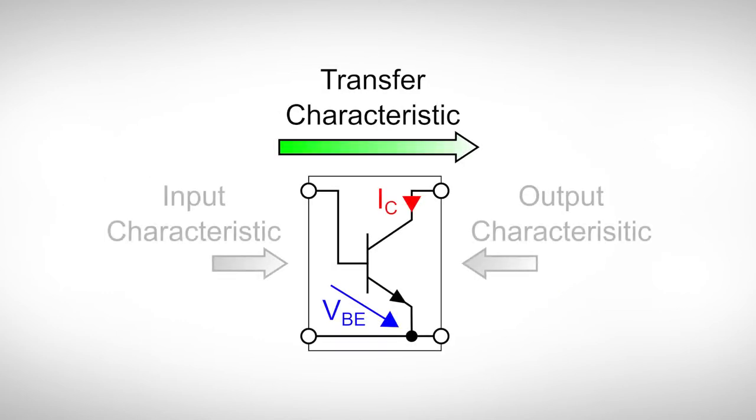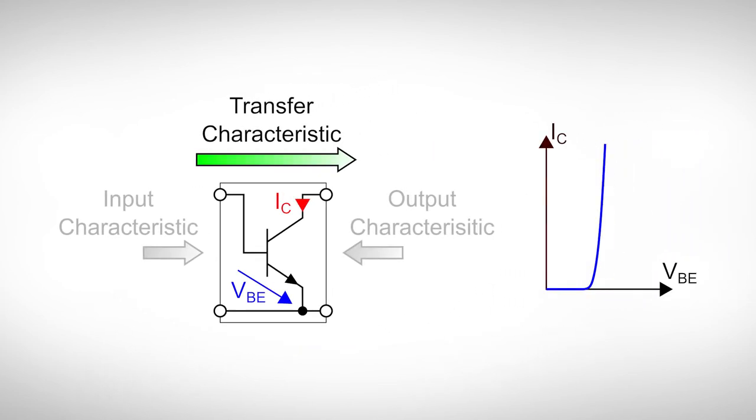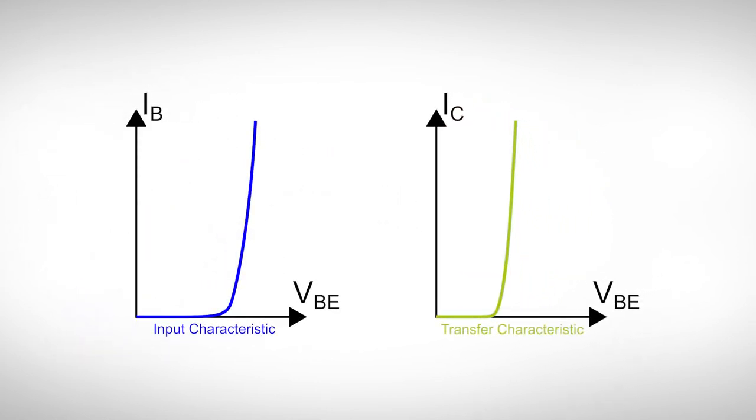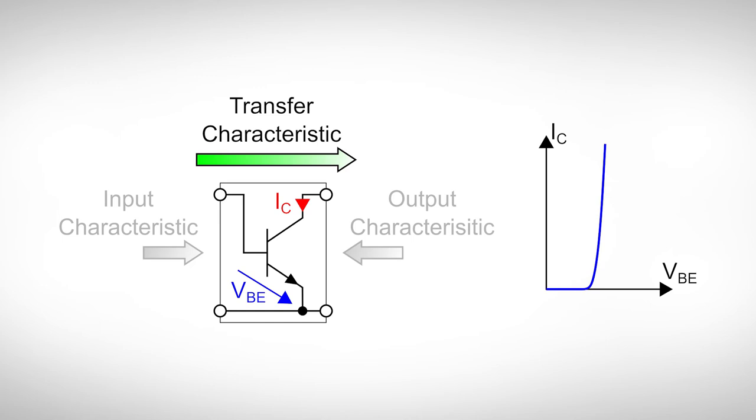Next up we have the transfer characteristic. It tells us how the collector current IC reacts to changes in base emitter voltage VBE. As the collector current IC is linked to the base current IB via the current gain beta, the transfer characteristic is in first approximation a scaled version of the input characteristic. This means the transfer characteristic again looks like a current voltage relation of a diode.